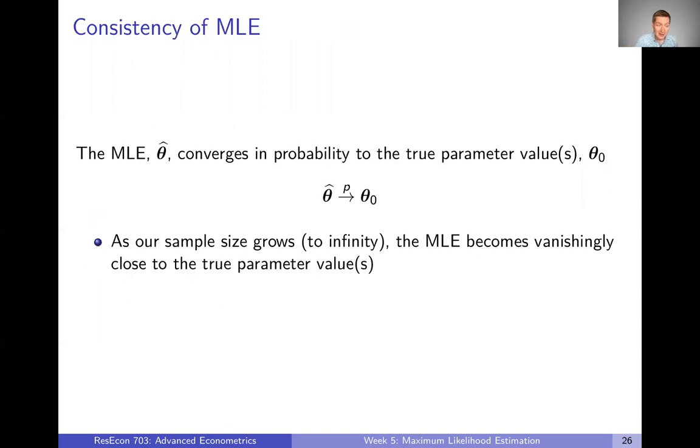All right, but the first property is consistency. This is, I think for a lot of people, one of the bare minimum minima that they're looking for in an estimator. Consistency says that the maximum likelihood estimator, that theta hat, converges in probability to the true parameter values. In this slide and all future slides, theta zero is going to represent the true parameter values, the things that we're trying to estimate. And theta hat will denote the actual estimators themselves.